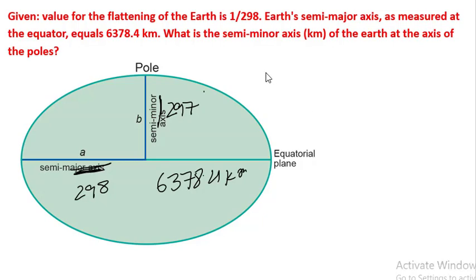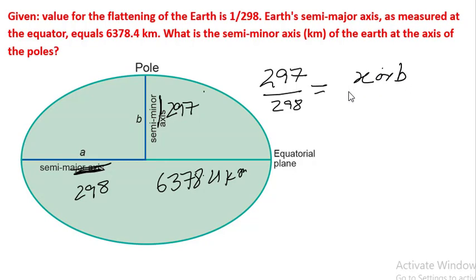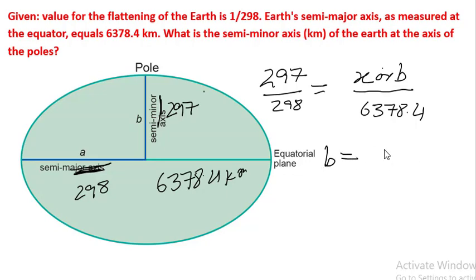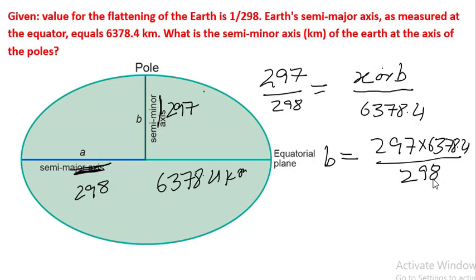It is more of a ratio problem where the equation we get is: 297 upon 298 is equal to X or B upon 6378.4. That means B is equal to 297 multiplied by 6378.4, divided by 298. Therefore B, or X, is equal to 6357 kilometers.